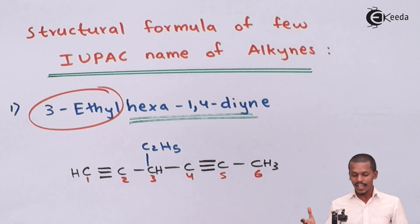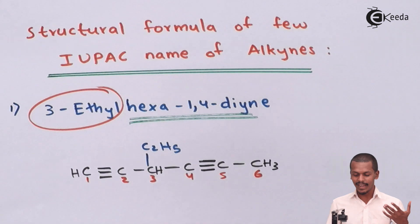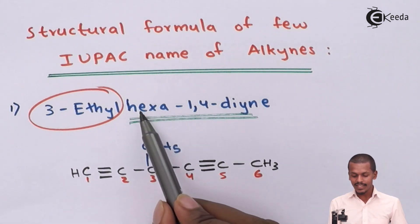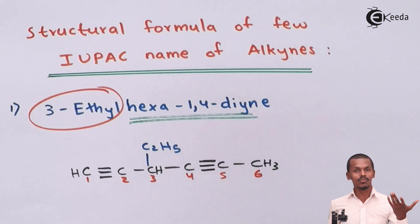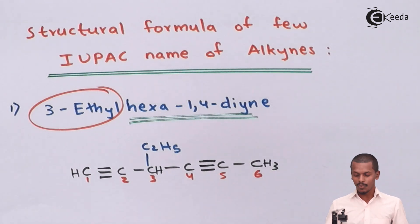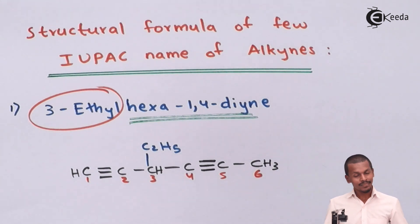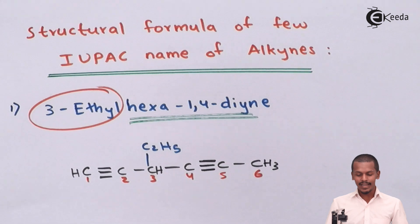This is the structure we have drawn for the IUPAC name of the alkene given to us — 3-ethyl-hexa-1,4-diene. The suffix '-di-ene' represents that more than one double bond is present. This is what we have learned. Now let us move on to the next example.